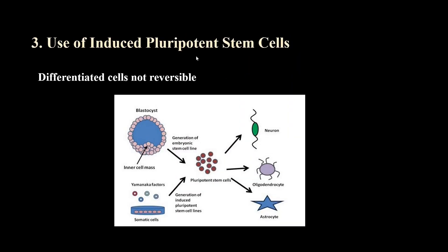The third approach is to use induced pluripotent stem cells, or iPS cells. Previously it was thought that once a cell differentiates into a specific type — like hair, muscle, or kidney cells — it is impossible to reverse these differentiated cells back to an early embryonic stem cell stage. But this concept was proven wrong by Yamanaka in 2006. Yamanaka introduced four genes, collectively called OSKM, into a cultured fibroblast cell colony. Fibroblasts are differentiated cells, and these four genes play a key role in maintaining cells in an undifferentiated state.